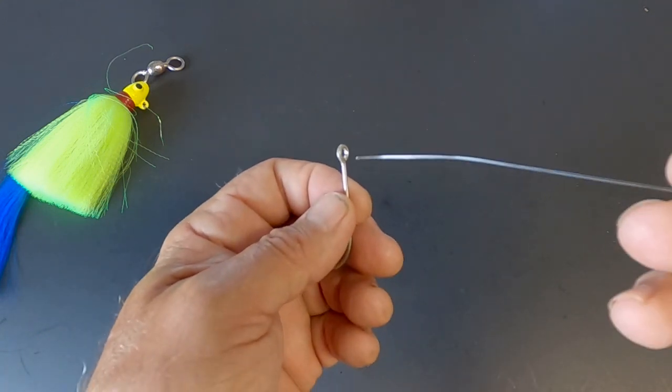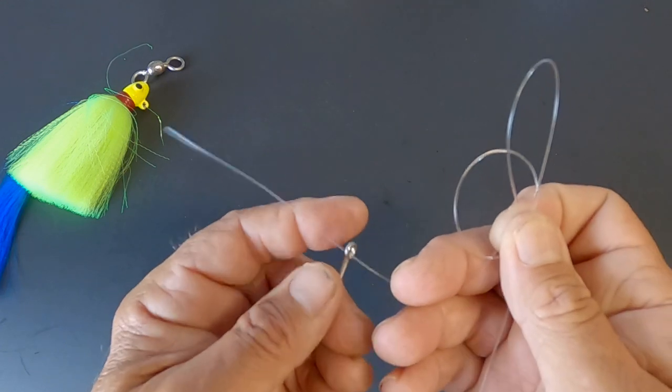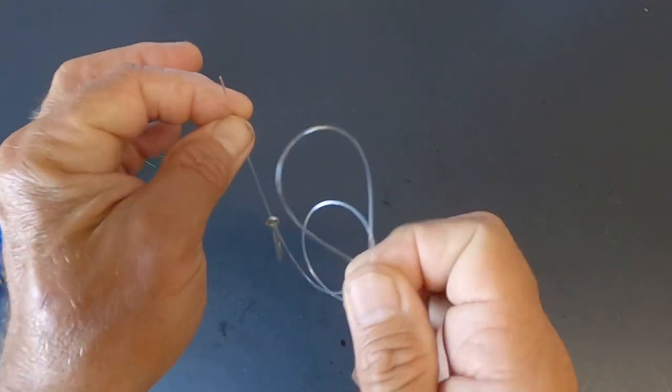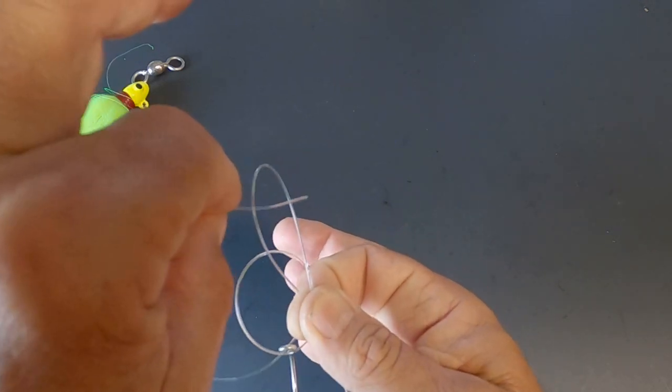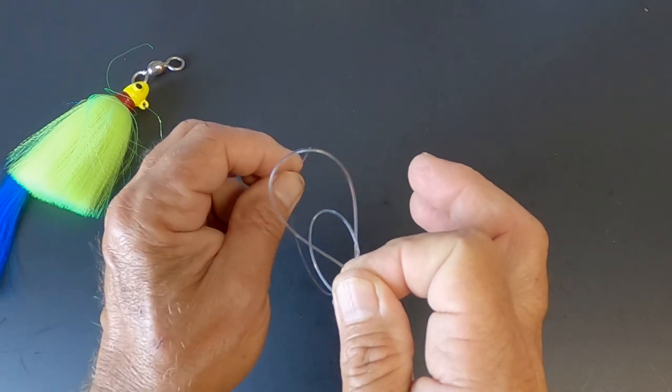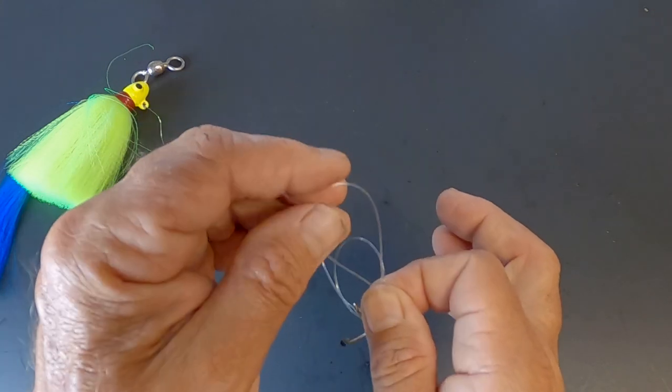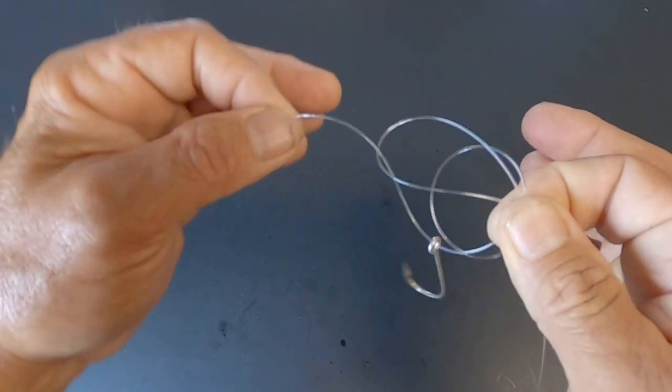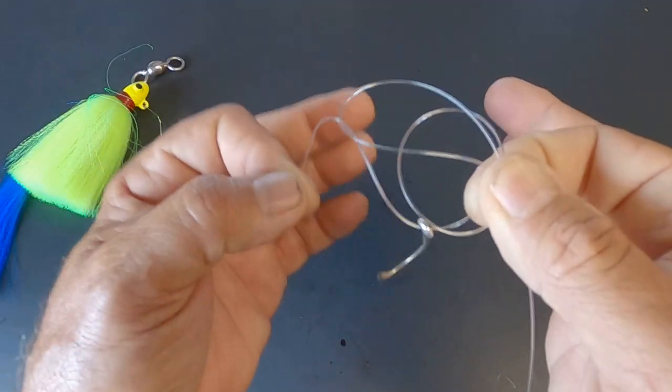Take your tag end, put it through the eye of your hook, lure, or swivel, then grab the tag end here. Now you're going to take that tag and put it through the back of that second loop that you made. So put it through the back of the second loop, and then grab the tag end like that. Then take that tag end and just pull it downward.